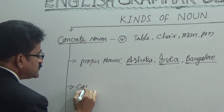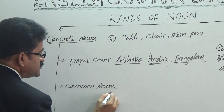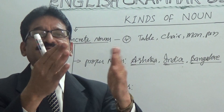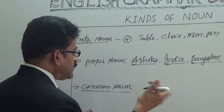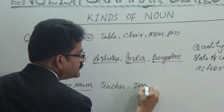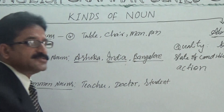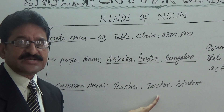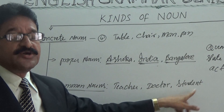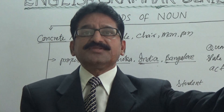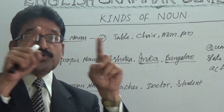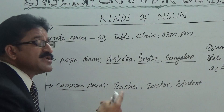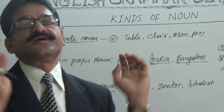The second one is common nouns. The nouns which can be used commonly to a particular kind of places, people, or things. For example: teacher, doctor, student. Anyone who teaches can be named a teacher; anyone who treats patients is called a doctor. If there are 60 students in a classroom, everyone may be mentioned with the name 'student' — that is a common noun. Common noun is a name which can be used to any one of a particular kind.